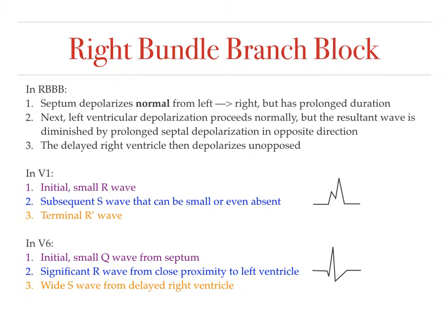For right bundle branch block, the first thing that happens is the septum depolarizes normally from left to right, but with a prolonged duration. Next, left ventricular depolarization proceeds normally; however, the resultant wave is diminished because of the prolonged septal depolarization in the opposite direction. This is followed by a delayed right ventricle, which then depolarizes unopposed. Let's go over the morphology of how we identify this on an EKG.